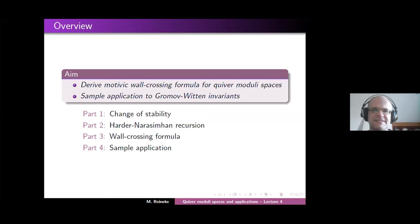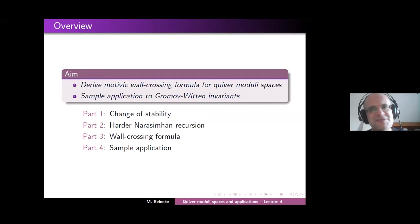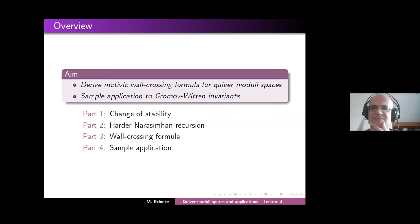We first discuss the change of stability. Recall from the last talk on Monday that to define the moduli spaces of stable representations, we have to make a choice of a stability function, which in general is uncanonical. This looks like a drawback of the theory, but we'll see today that it's really a very nice feature that leads to some strong and unexpected things.